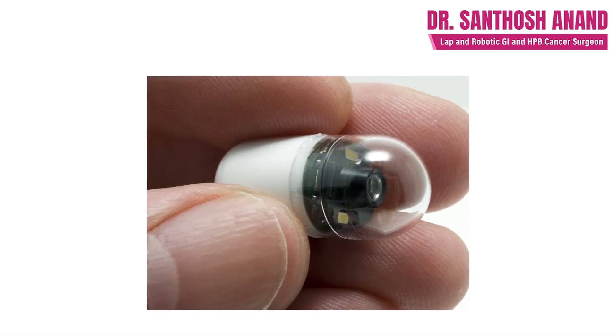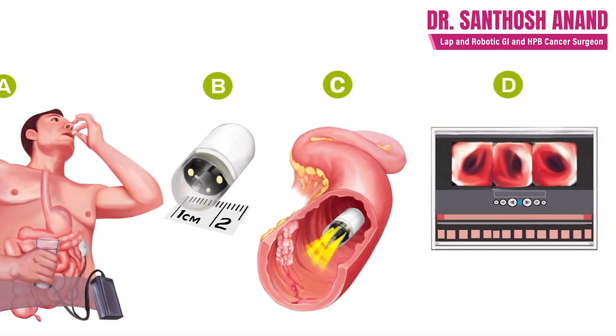Many people ask whether there is an alternate procedure for endoscopy due to fear. Yes, we have an alternative called capsule endoscopy — a small pill with a battery and camera within it. When swallowed, it slowly travels down through the food pipe and once it reaches the stomach it will be excreted through the stools. The images are recorded via Bluetooth connectivity and viewed on a computer, allowing us to see any growth present.